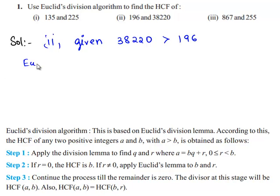So we apply Euclid's division lemma for 38,220 and 196. First we shall divide 38,220 by 196.